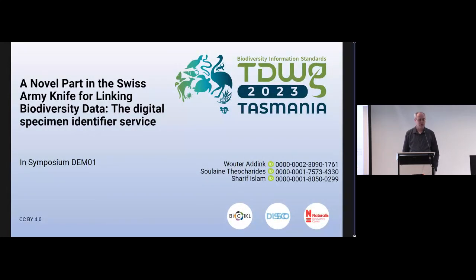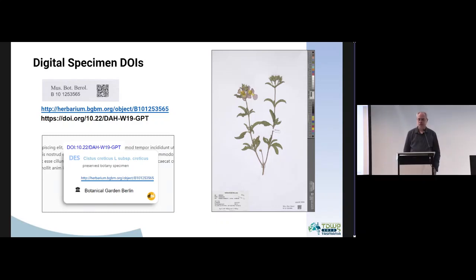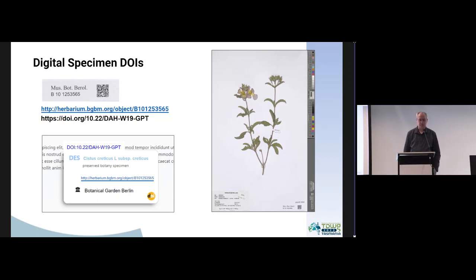We need identifiers that are equally persistent to connect with all the data in other infrastructures. This morning you may have attended the annotation session where there was a lot of talk about digital specimens as a new object on the internet — a one-stop shop to find all information related to a specimen. To make that reality, the most important thing is to have a new identifier, and for that we have chosen to use DOIs.